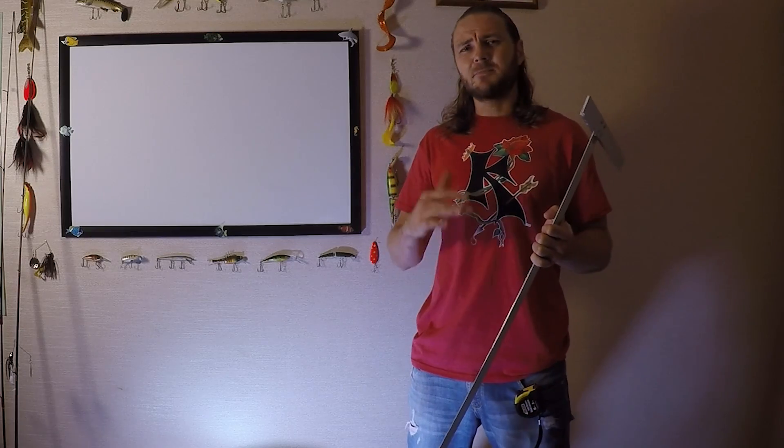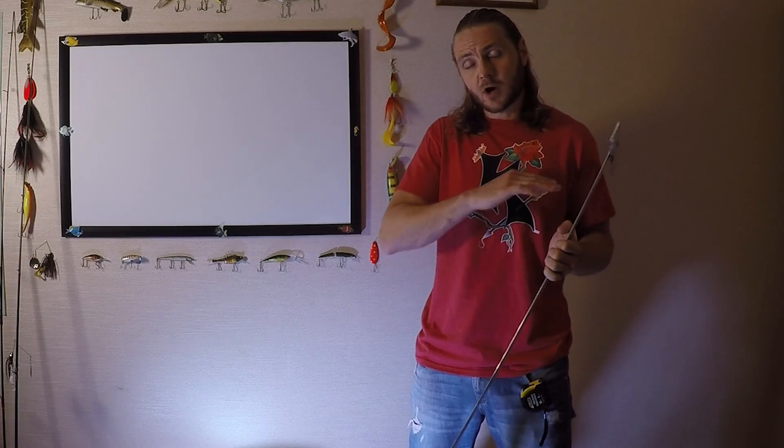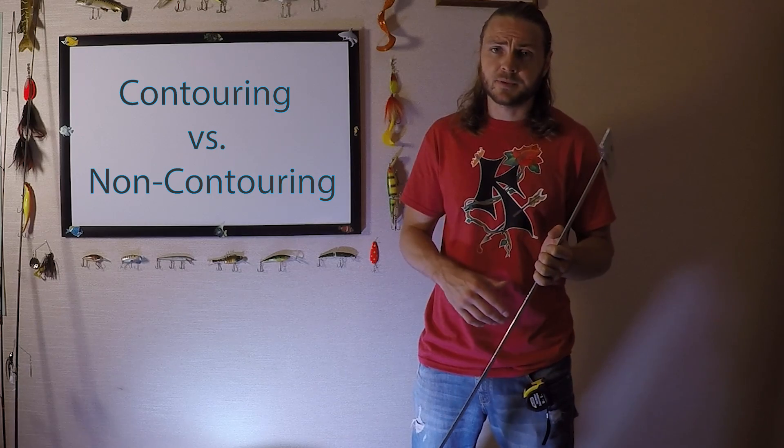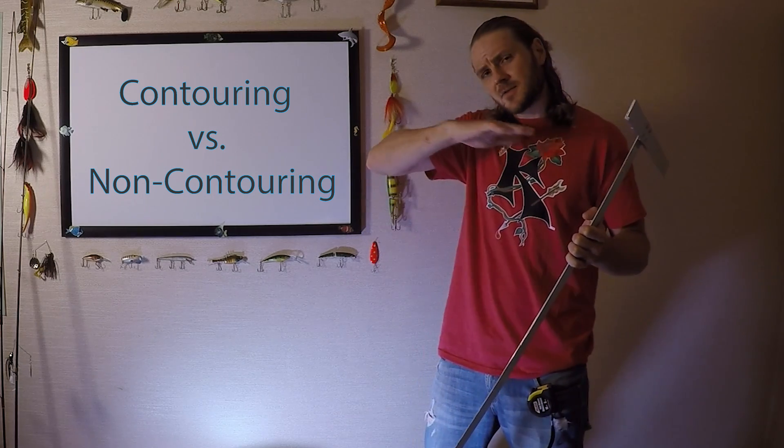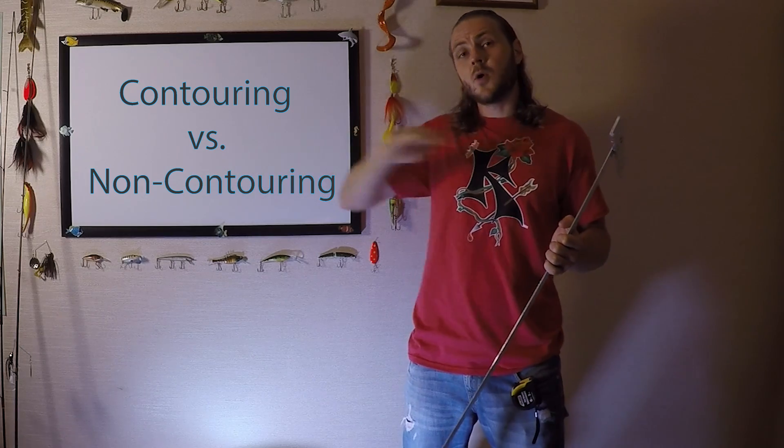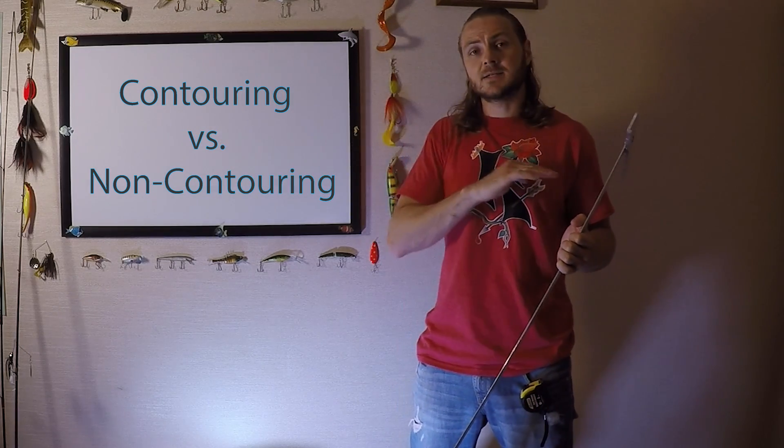And secondly, it's imperative to know whether your measurements need to be made on a non-contouring plane or a contouring plane. And what I mean by that is do your measurements need to take the form of the fish that you're measuring, or do they need to be along a straight axis?